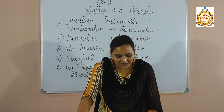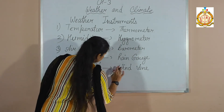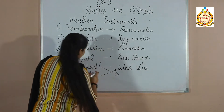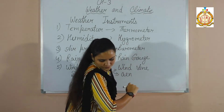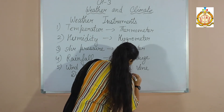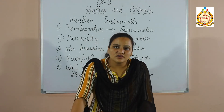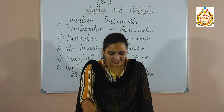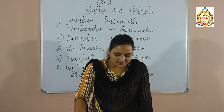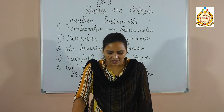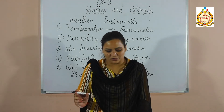The next instrument is the anemometer. It is the instrument that helps to measure the speed of the wind. Wind vane is for direction, and for wind speed we use the anemometer. The picture of the anemometer is given on page number 32. The speed of the wind is measured in kilometers per hour or meters per second. When the number of rotations of the cup is more, it indicates that the wind is blowing at a high speed.